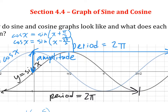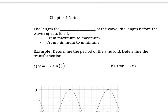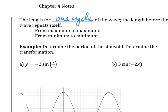Your task now is to do the other one — how do you move the cosine graph so it looks just like the sine graph? So period is the length for one complete cycle of the wave; I usually look at maximum to maximum or minimum to minimum. Let's look at these examples: determine the period of the sinusoid and then determine the transformation. Remember the period equation: 2π over the absolute value of B, where B is the number multiplied to x.